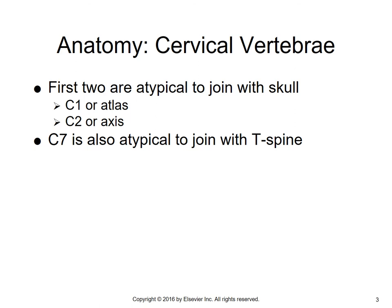The first two are atypical and join to the skull. C1 is the atlas, C2 is the axis. C7 is also atypical and it joins with the thoracic spine.